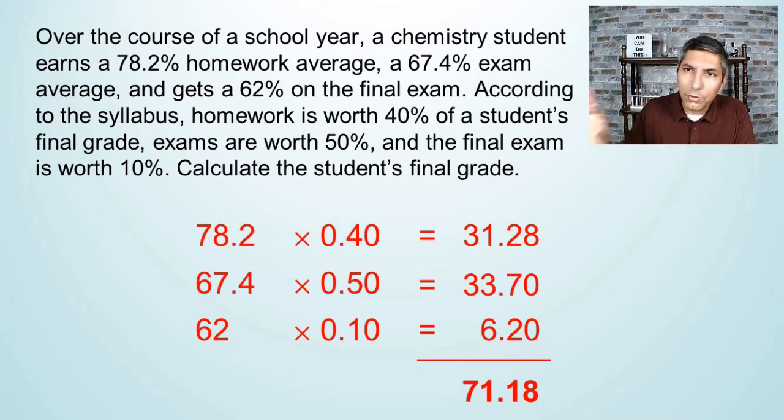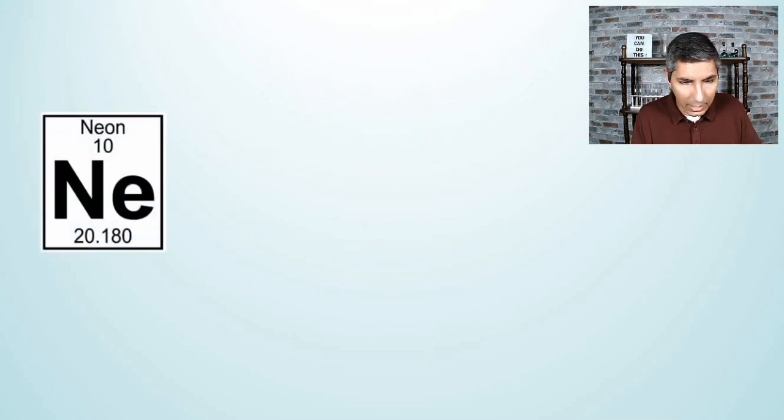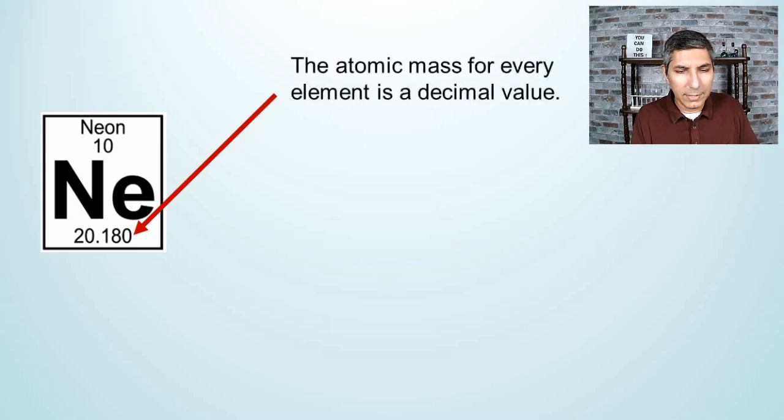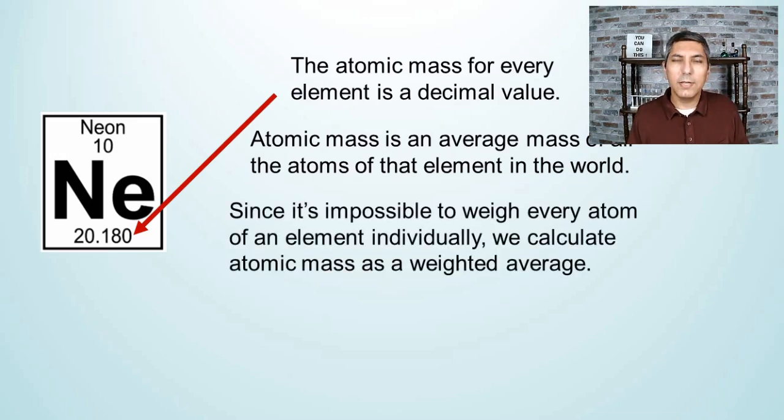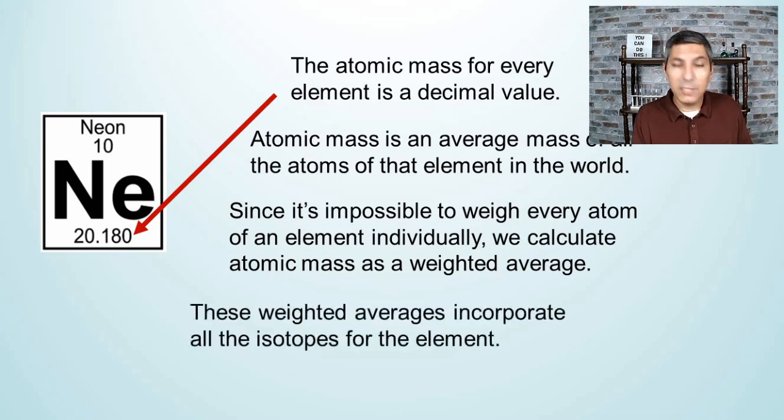So what we do is we take samples of an element here and a sample of an element over there and over here, and we can find the masses of the individual isotopes and the percentages that those isotopes occupy in the total amount of that element. That average atomic mass that we've been talking about, that decimal number 20.180, that is an average mass of all the atoms of that element in the world. It's impossible to weigh every atom individually, so this has to be calculated as a weighted average. These weighted averages are going to incorporate all the isotopes for that element.